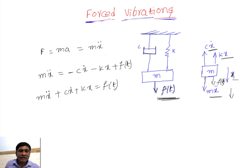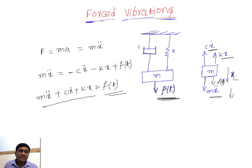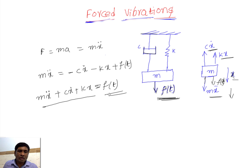When F(t) — the externally excited force — is zero, this equation reduces to free vibration with damping, which we already know how to solve. But here we have an additional force term F(t) in the equation.